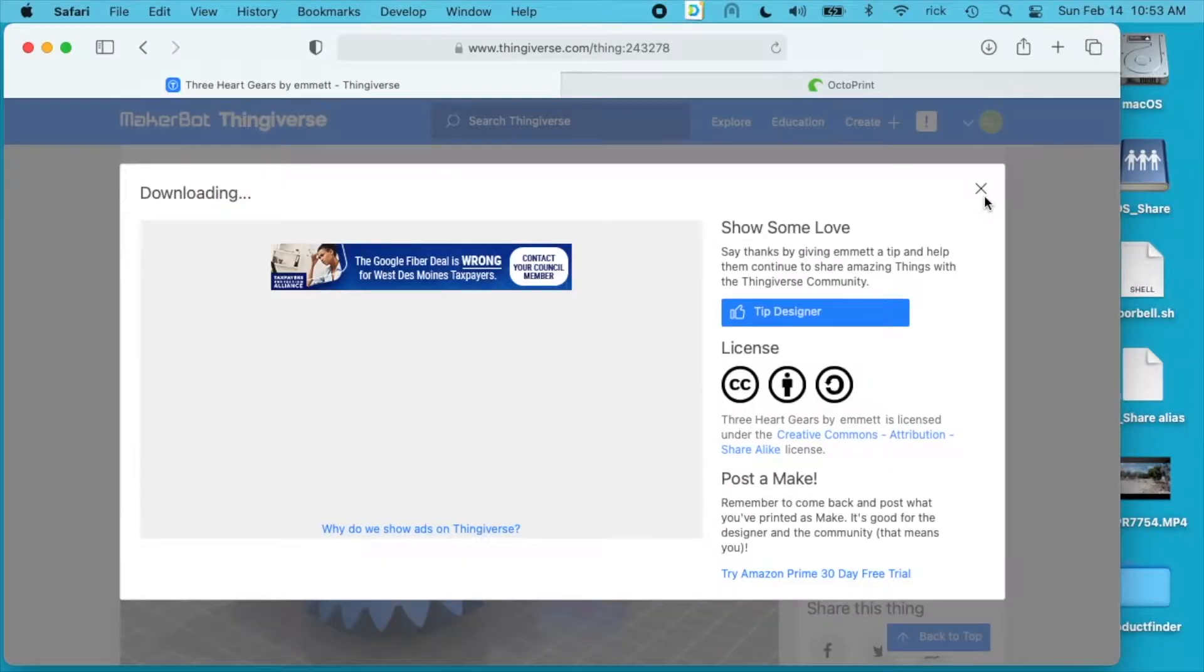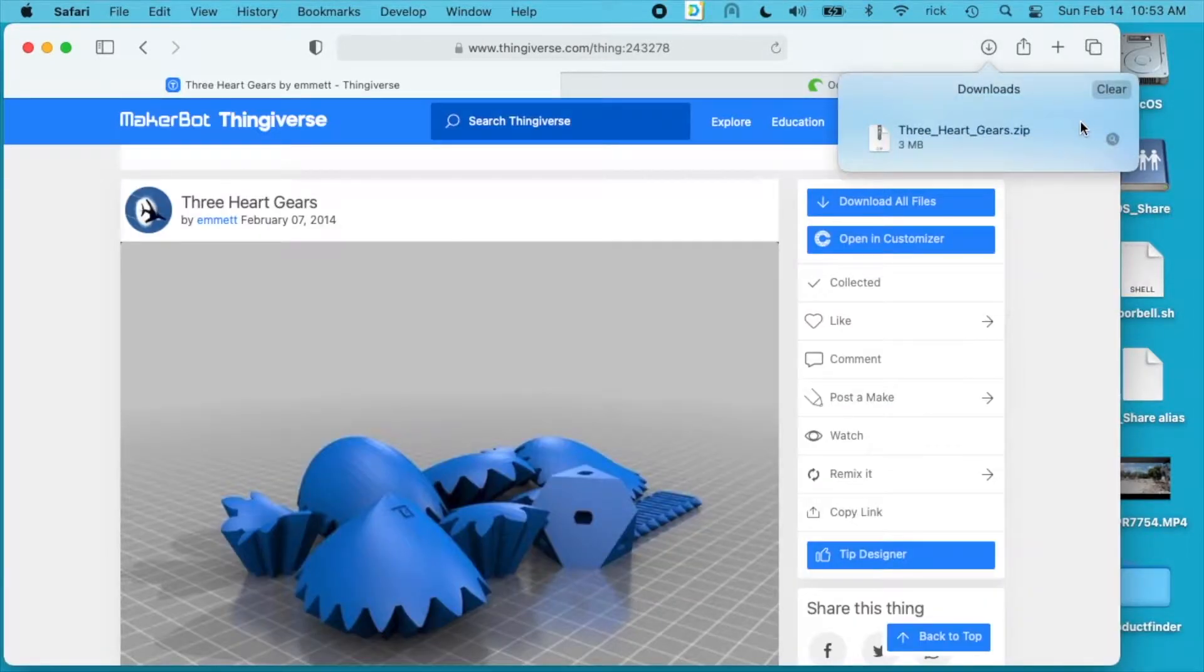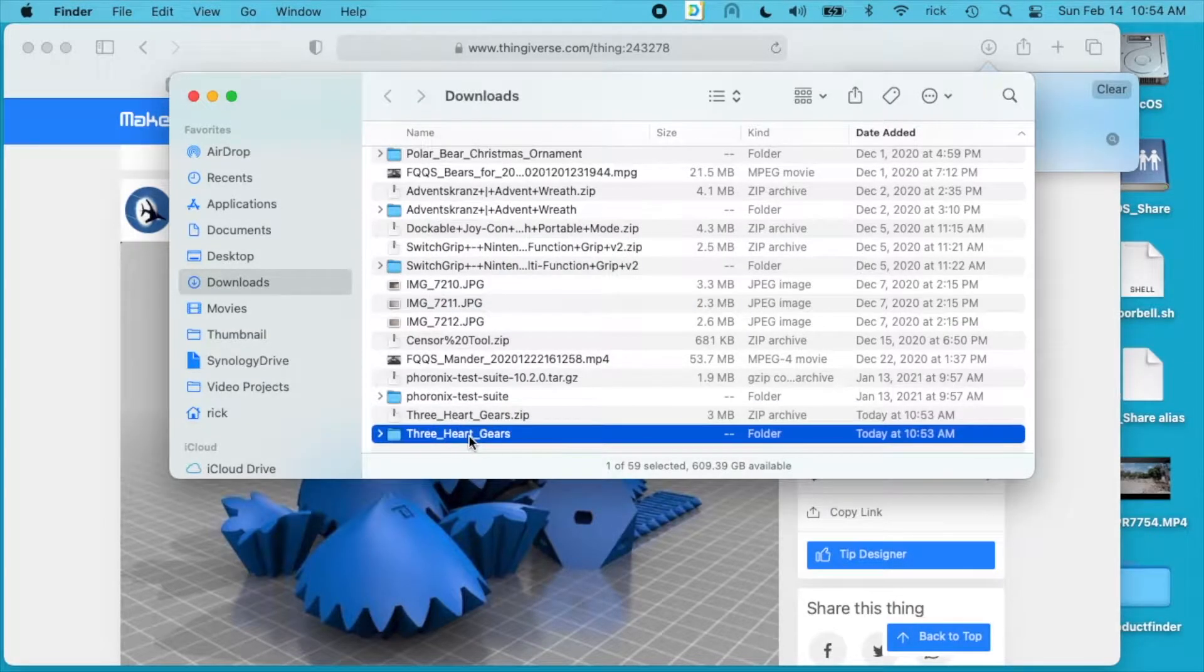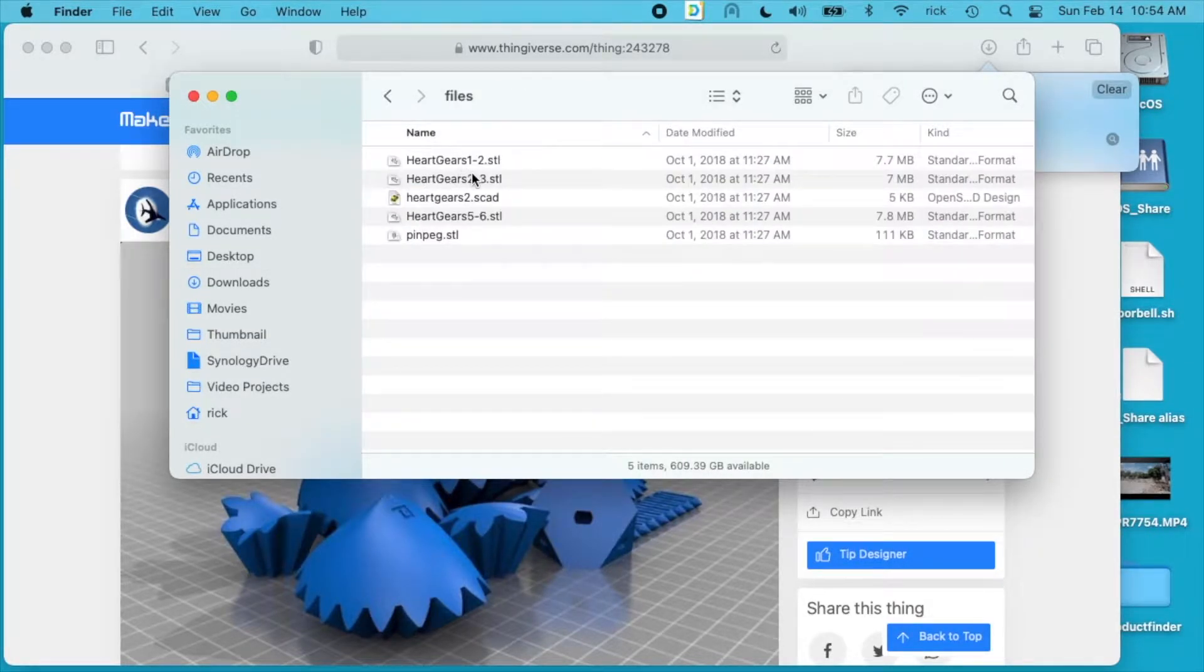I'll go ahead and download this. I'll go to my downloads folder and there are three different files here, well three different models and then you have the SCAD so you can use OpenSCAD to actually edit this and modify it and do all sorts of things with it.